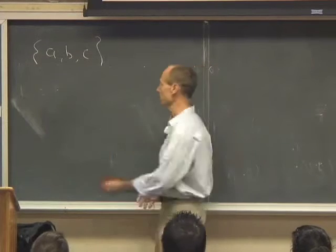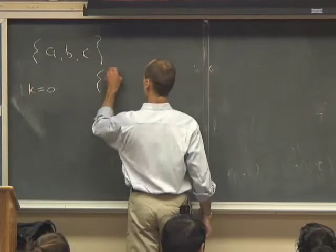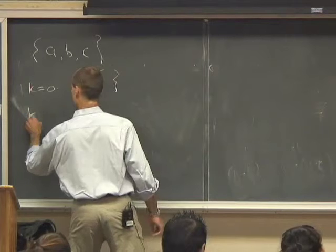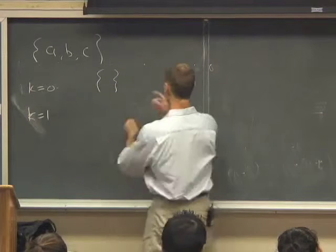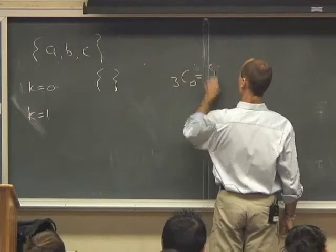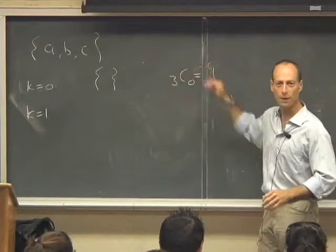For k equals 0, we only have one subset, the empty set. So this is 3 choose 0 equals 1. That's what we're just calculating. We've enumerated it. There's only one thing there and it all matches.